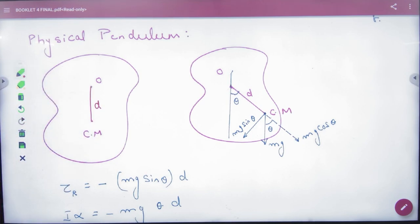It's D. This distance given is D. You want to derive time period and it's very easy.